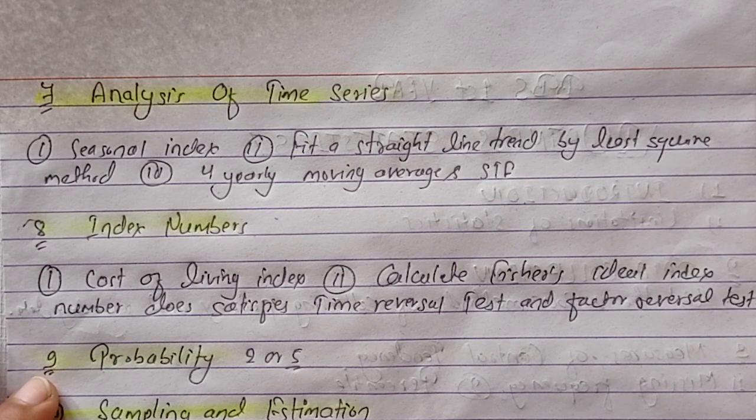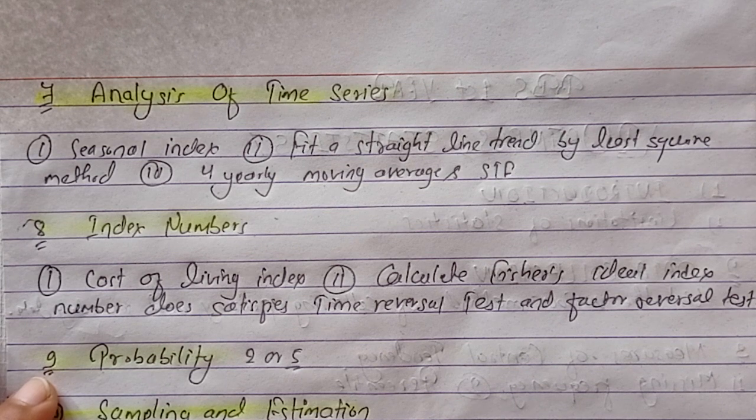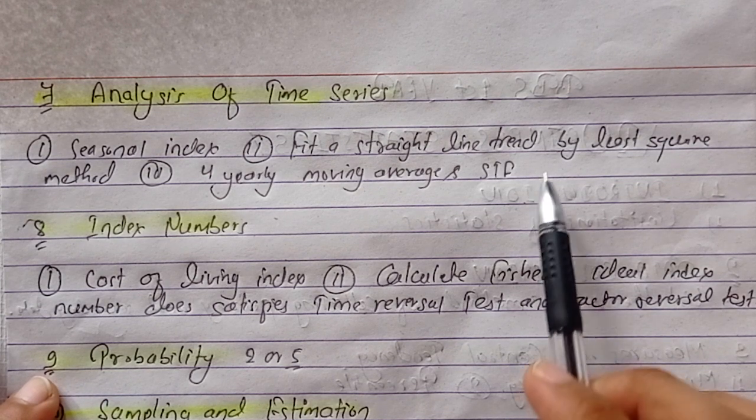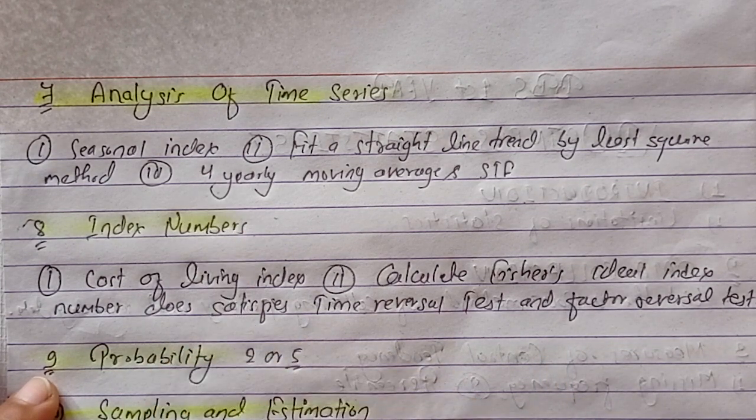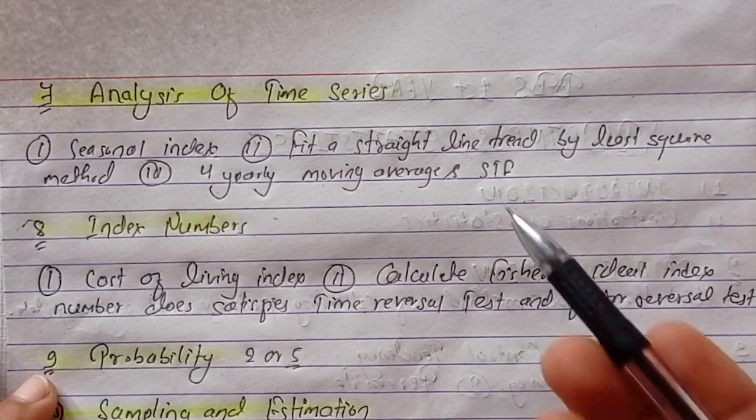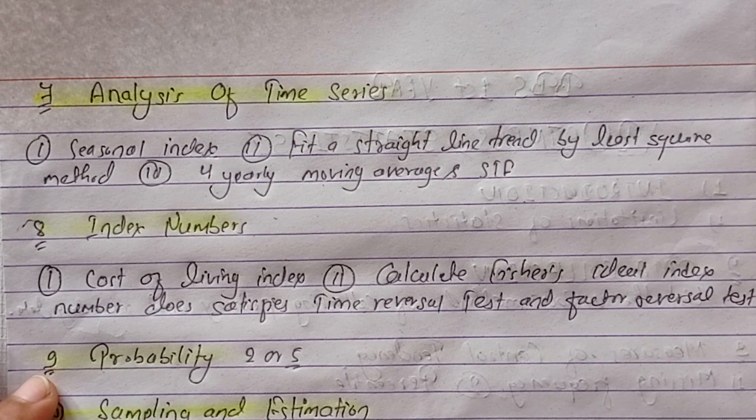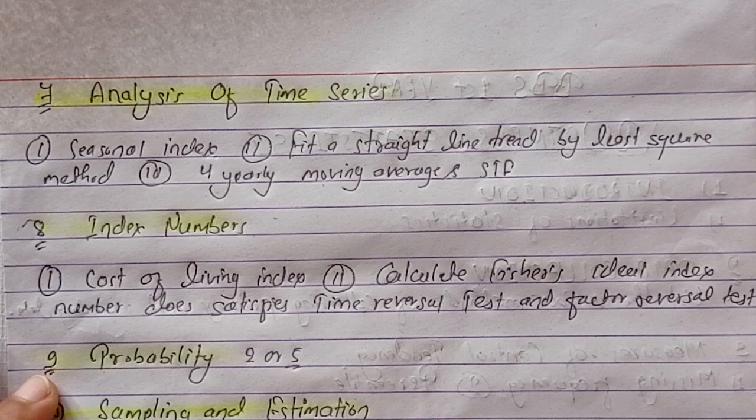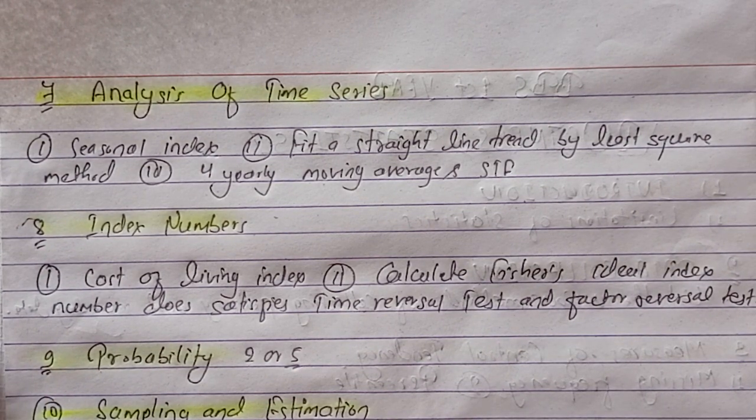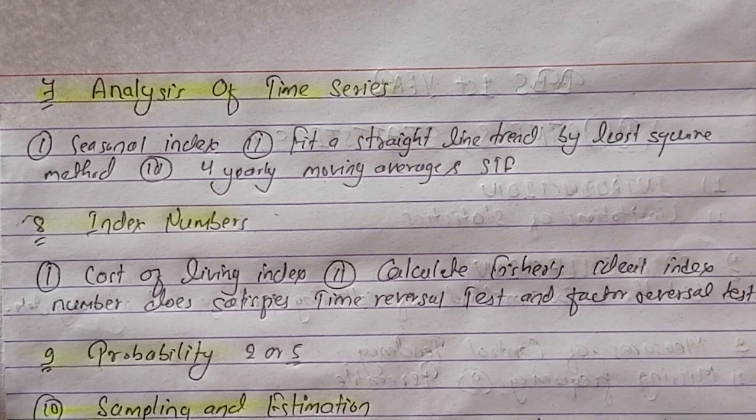Looking at the analysis of time series, there is a summation question which is least square method and the seasonal index. Seasonal index is more important, the least square method is more important. So we have the 4 year moving average and short term fluctuation in time series is more important. We have the formula for time additive model and multiplicative model.